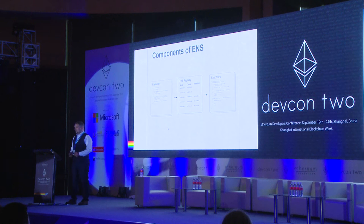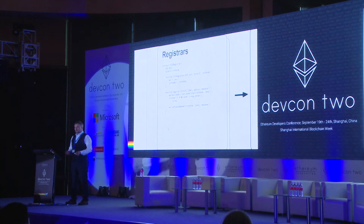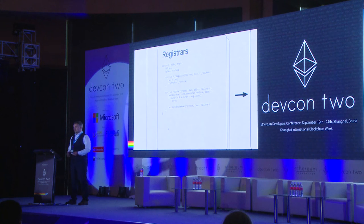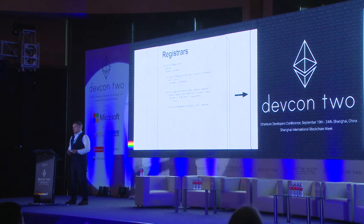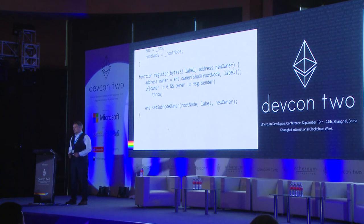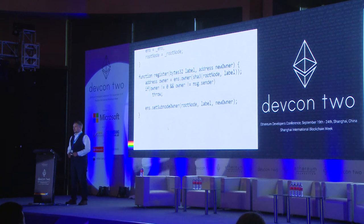The third component of ENS is the registrars. Registrars are the owners in the ENS registry and their job is to assign names to people. The simplest possible registrar is me — I can own a domain using my external address and give you a sub-name directly. But for top level names, it's helpful to have a smart contract because it's automated, ensures fairness, and everyone knows the registration rules. This simple registrar replicates the functionality of the existing name reg: the first person to ask for a name gets it, and if they own it, they can assign it to someone else.